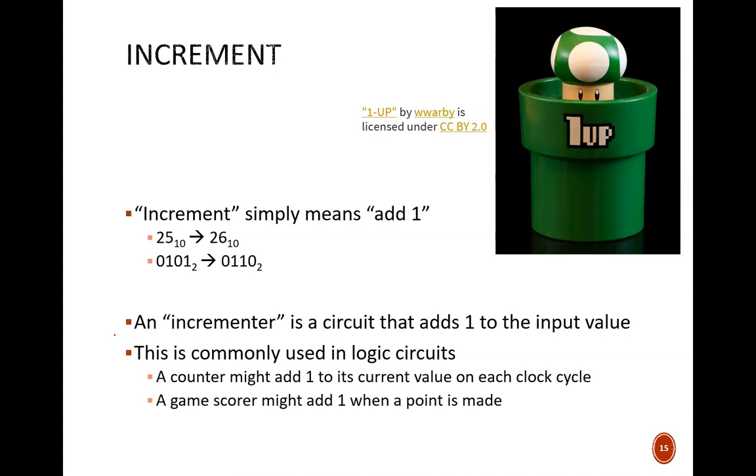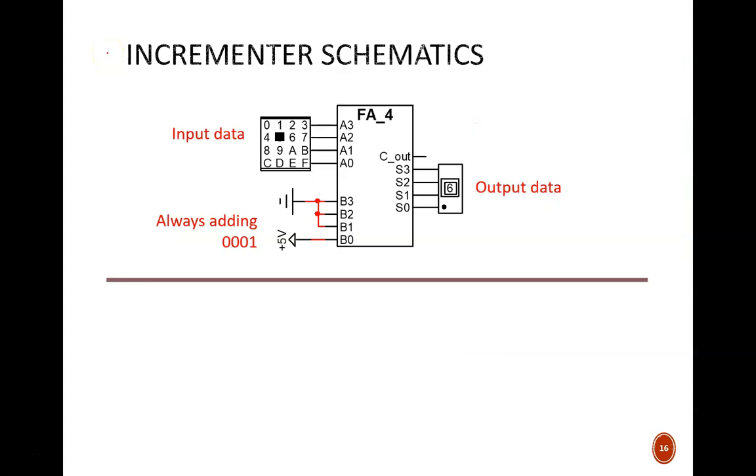Another example would be a scorekeeping device for a game, which would need to add 1 to the current score after each point. There are many ways we can build an incrementer logic circuit, and they can use any number of bits. This first schematic uses 4 bits and takes advantage of the 4-bit adder discussed a couple videos ago.